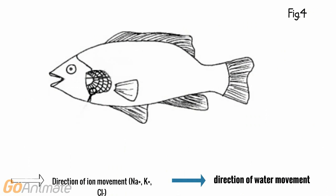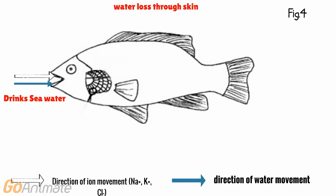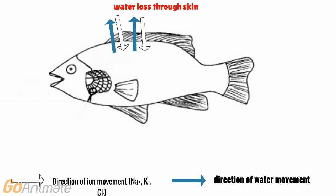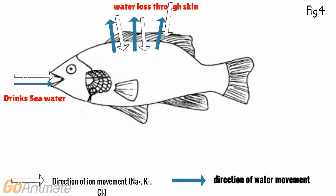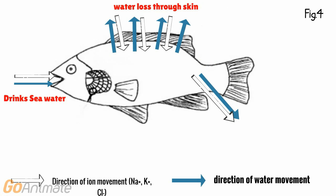Seawater fish are hypotonic to their surroundings, meaning that their blood has a higher water concentration than the surrounding seawater. As seawater passes through the mouth and over the gill membranes, water molecules diffuse out of the blood into the seawater by osmosis. To replace the water they lose, saltwater fish drink seawater. Drinking seawater brings a large quantity of salt into the blood, and this has to be removed. They also produce a very small volume of urine.